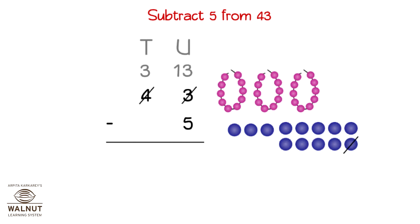Let's take away 5 units: 1, 2, 3, 4, 5. How many units are left? 8. Let's subtract the 10s. We have 3 tens. 3 tens minus 0 tens is 3 tens. And we get our answer, which is 38.